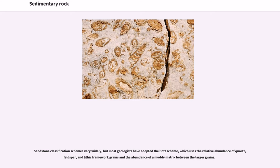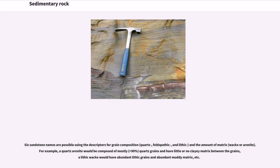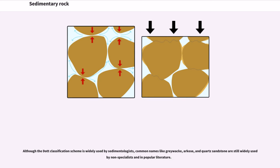Sandstone classification schemes vary widely, but most geologists have adopted the Dott scheme, which uses the relative abundance of quartz, feldspar, and lithic framework grains and the abundance of a muddy matrix between the larger grains. Six sandstone names are possible using the descriptors for grain composition and the amount of matrix. Although the Dott classification scheme is widely used by sedimentologists, common names like greywacke, arkose, and quartz sandstone are still widely used by non-specialists and in popular literature.